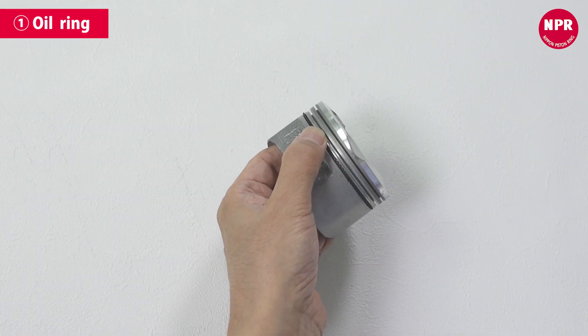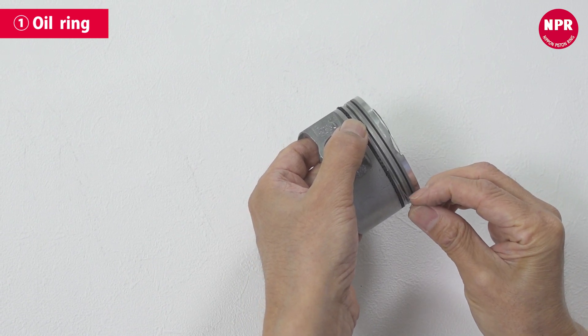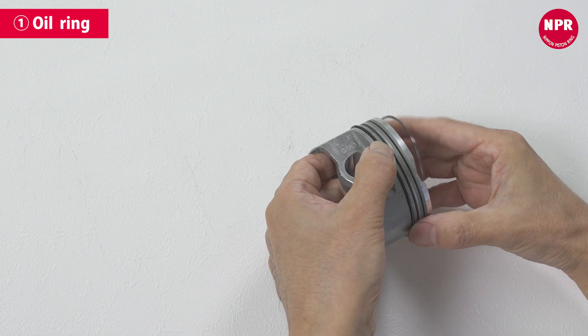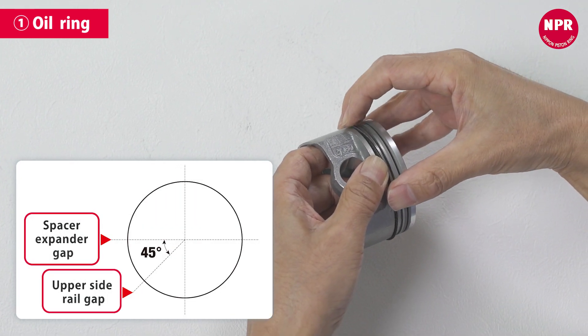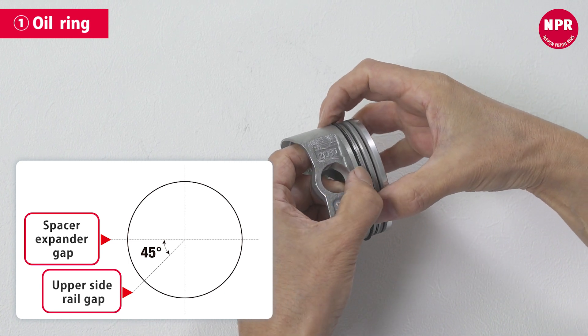Next, attach the upper side rail. While still holding the space expander's end gap, attach the side rail between the space expander and the upper face of the piston ring groove. Line up the side rail end gap so that it is offset by 45 degrees from the space expander's end gap.